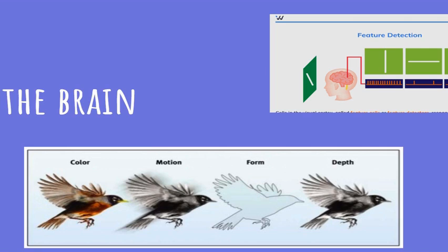Additionally, what's happening in the brain is something called parallel processing — a visual process where our brain separately but simultaneously processes numerous things. It processes color, motion, depth, and form all at exactly the same time in different portions of our brain. Those come together to give us a full image of a person who has color, motion, form, and depth — all processed in different areas simultaneously to give us the full picture of visual understanding.